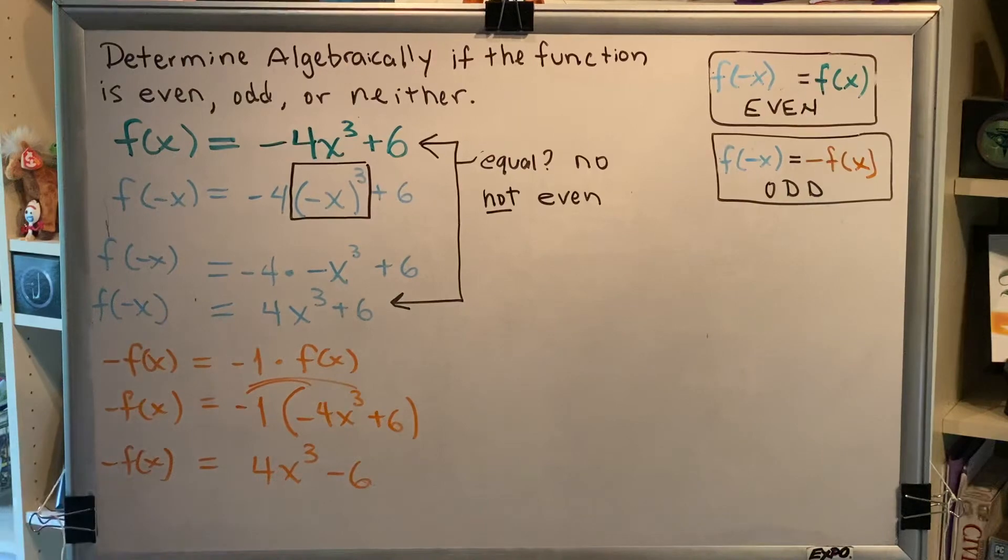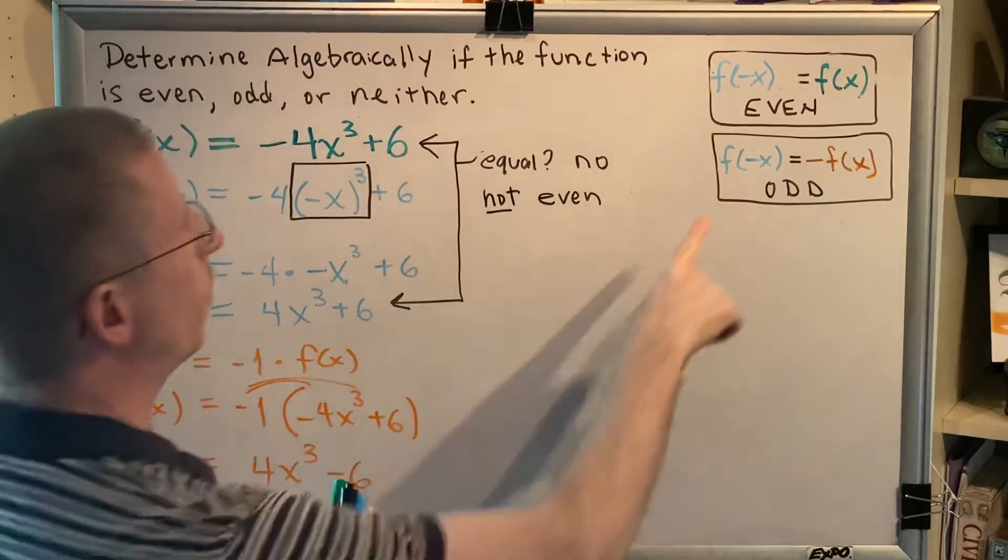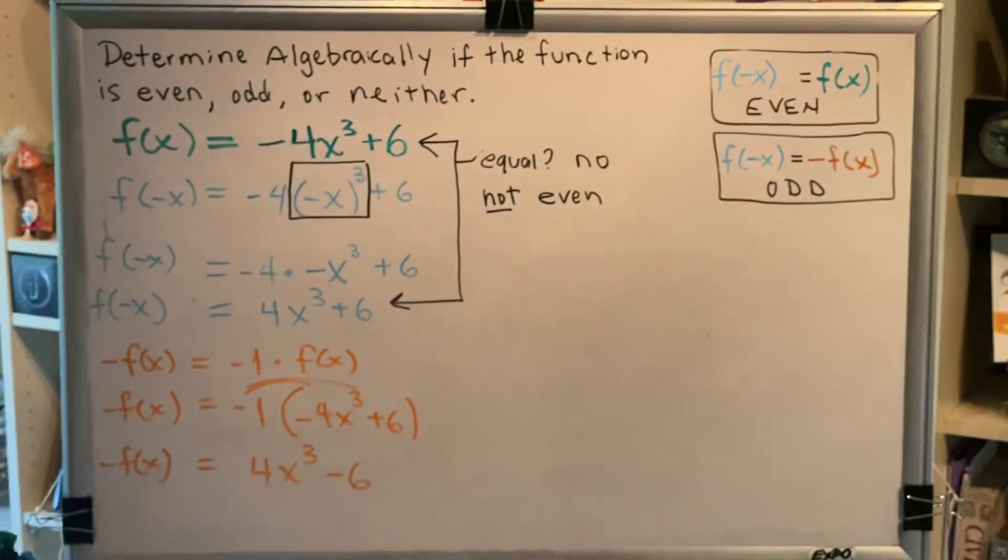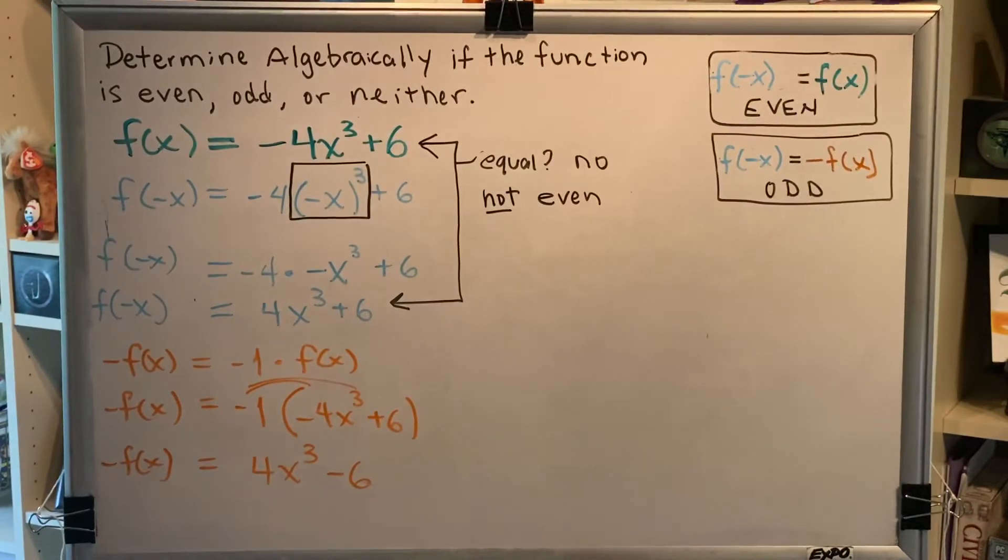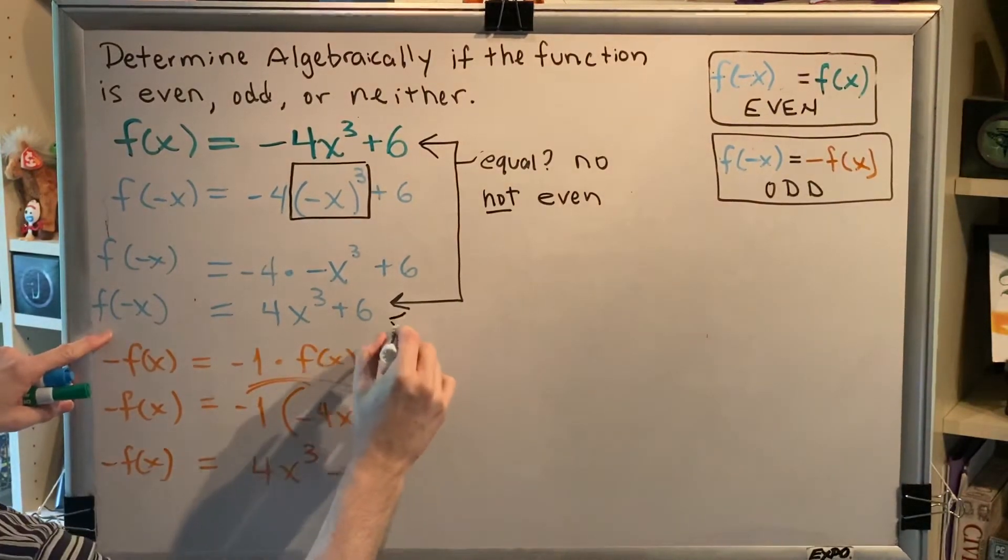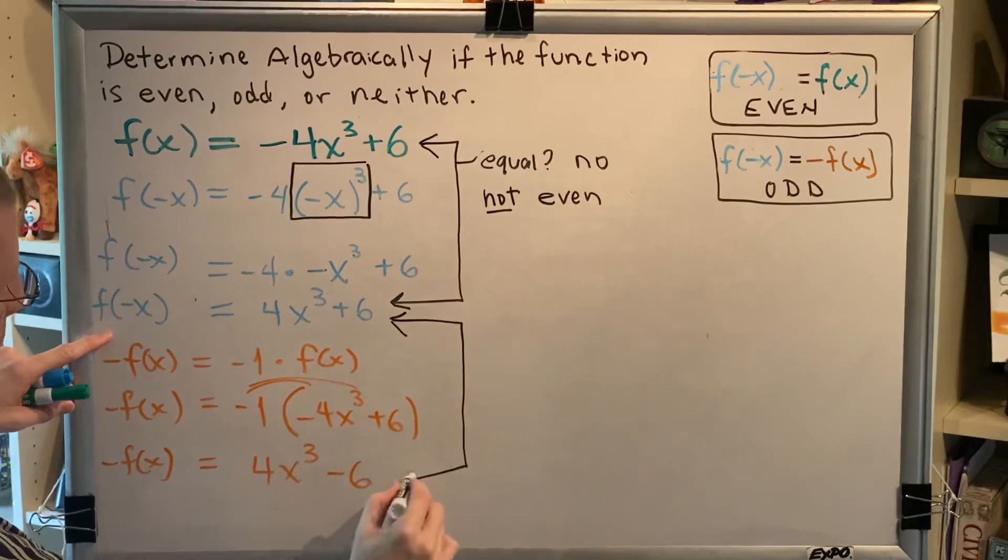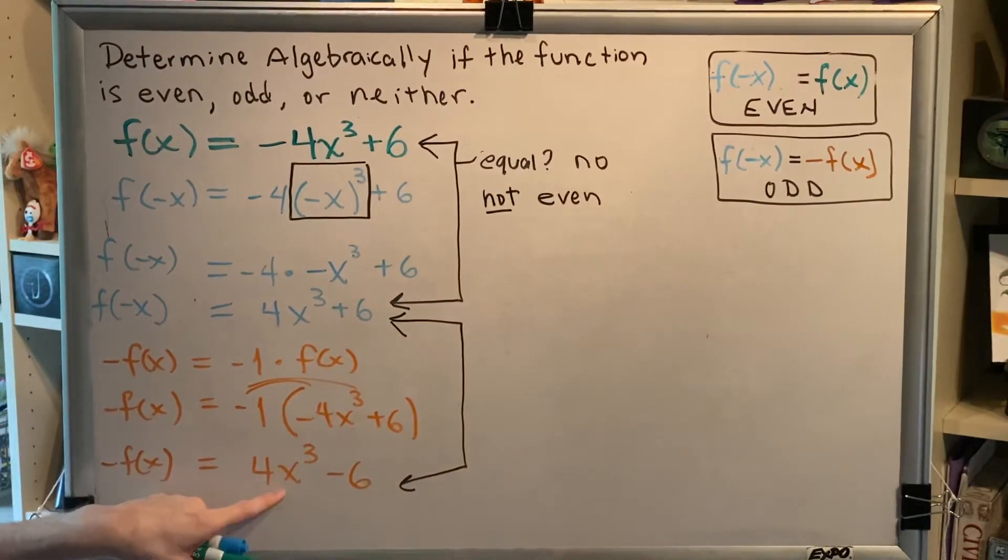We're now ready for our second comparison, the light blue to the orange. So, does f of negative x, shown here in the light blue, equal negative f of x, shown here in the orange?